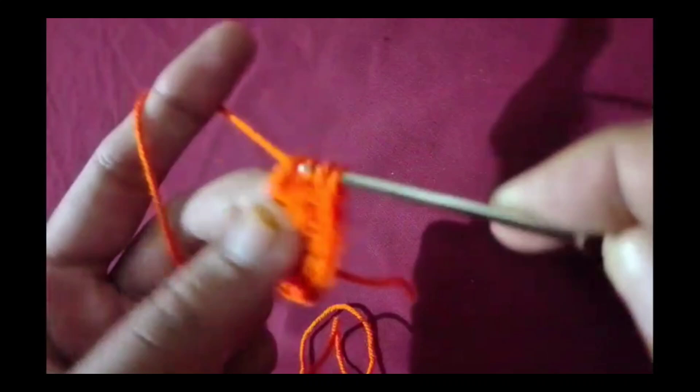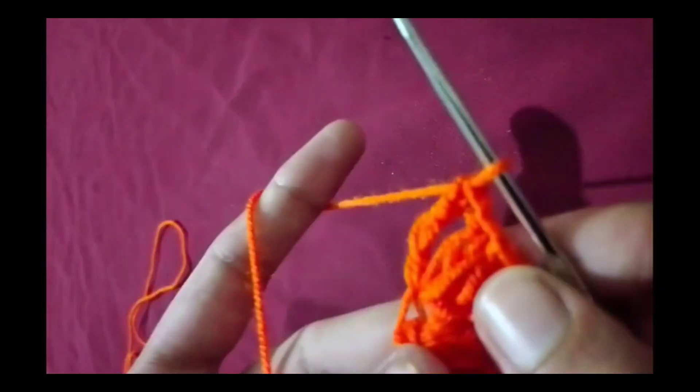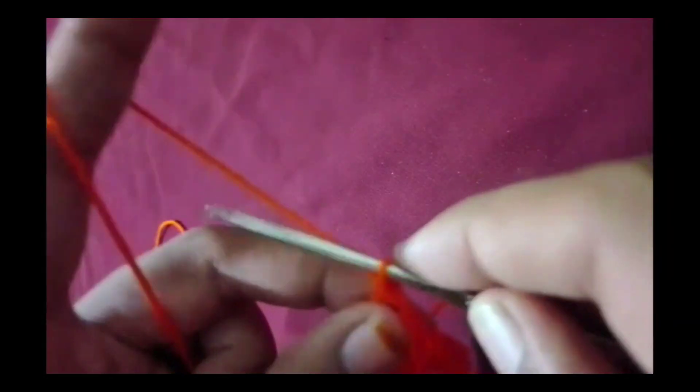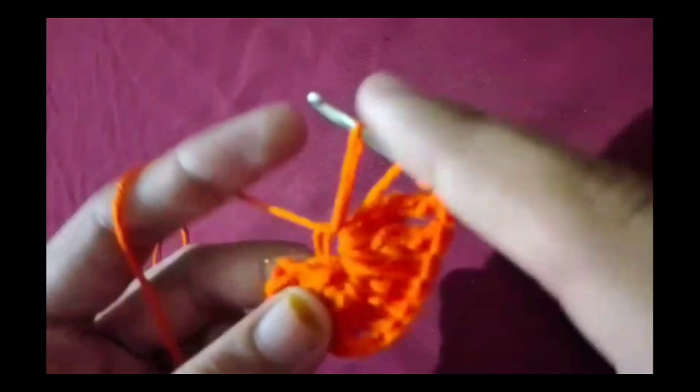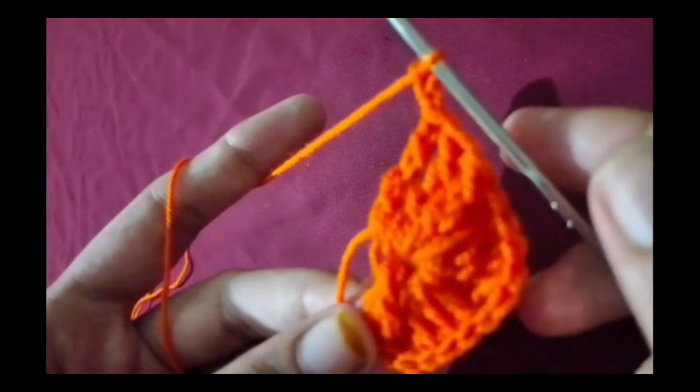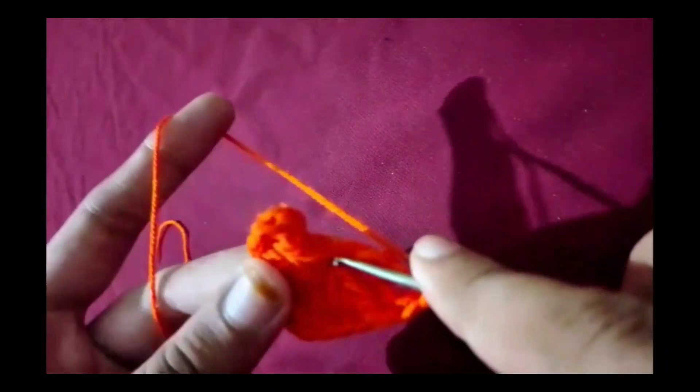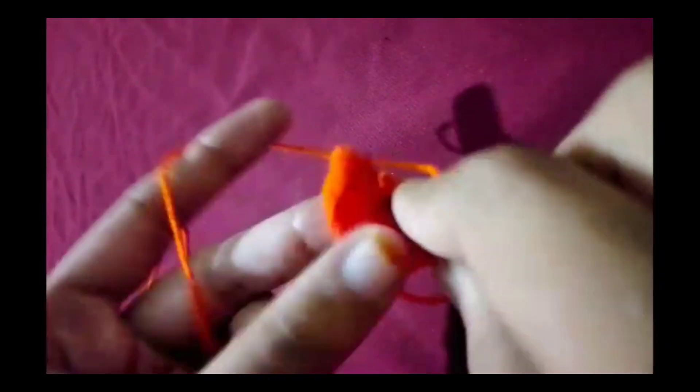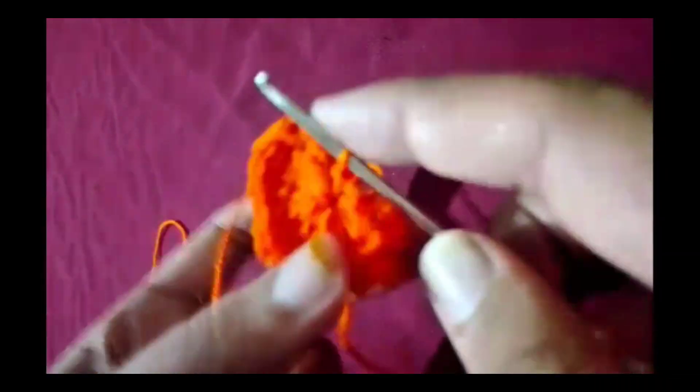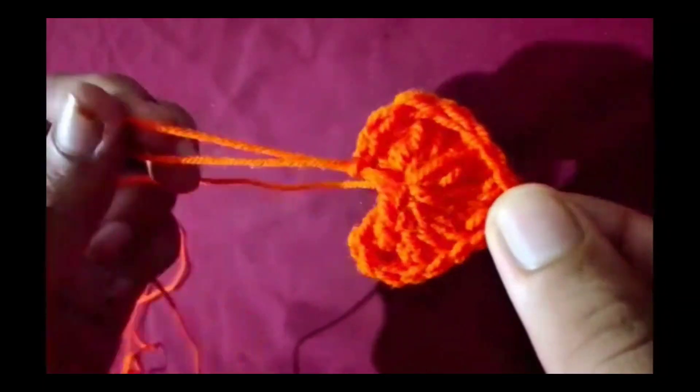Second round: now we'll continue with the second half. Treble crochet three times into the loop, double crochet three times again. Finally, chain 3 and slip stitch into the center. Now you can see the heart taking shape.